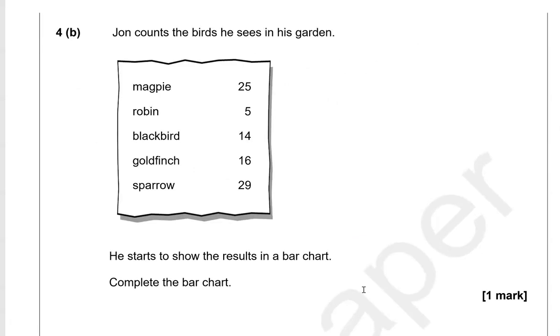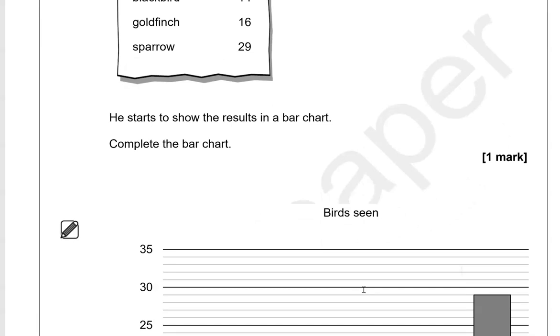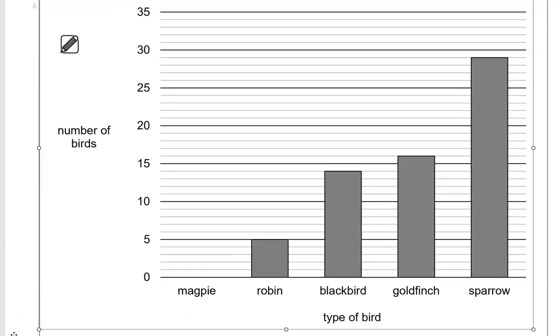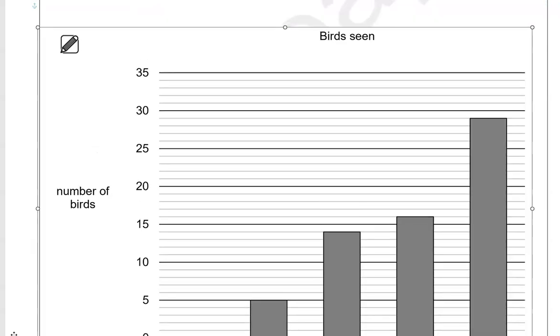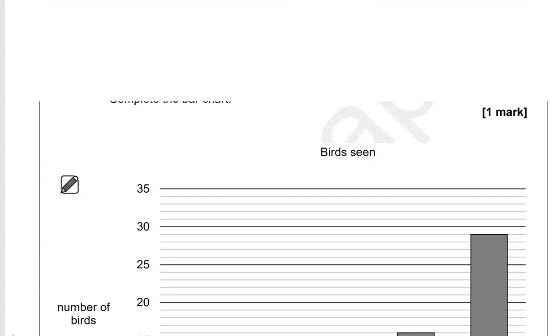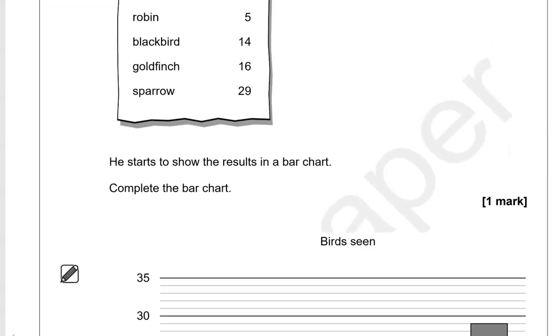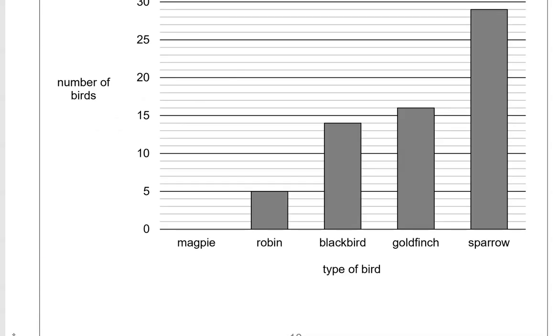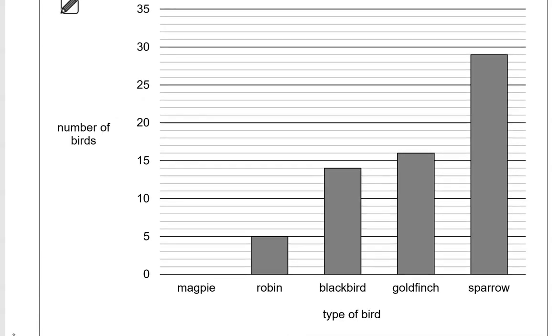John counts the birds he sees in his garden. He starts to show the results in a bar chart. Complete the bar chart. So we're given 4 bars. We're just missing magpies. So let's have a look. How many magpies did he see? And that is 25 of them. So we're going to show 25. So here is 25. We'll need to use a ruler to draw a straight line here. The rest is completed.